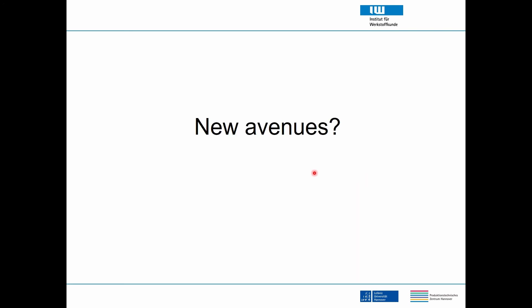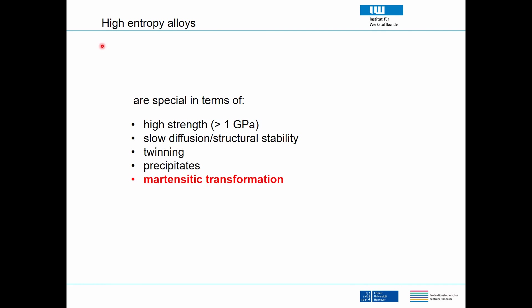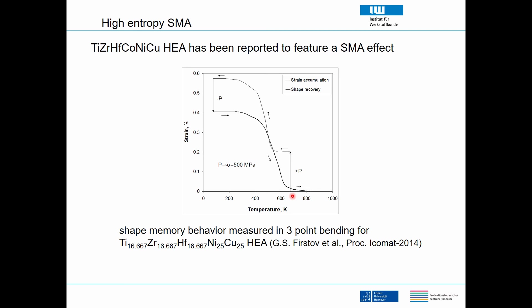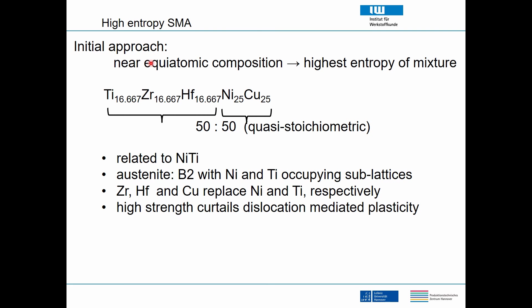Additional new avenues include high entropy alloys. These alloys are notable for their strength, slow diffusion, good structural stability, and people have observed twinning, precipitates, and martensitic transformation in them. The first report of shape memory behavior in a HEA showed that applying a load, cooling to get a strain change, then unloading and heating resulted in fully recovered strain, demonstrated in three-point bending.